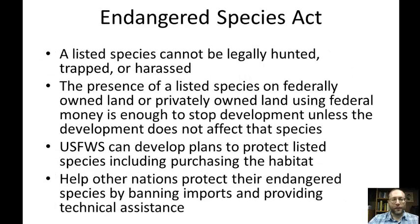As to what the Endangered Species Act does: a listed species, both threatened and endangered, cannot be legally hunted, trapped, or harassed. If the species is found on federally owned land, or on privately owned land where development is using federal funds, then development can be stopped unless it does not affect the species. The U.S. Fish and Wildlife Service can develop plans to protect listed species, including purchasing habitat. It also enables helping other nations by banning imports of endangered species and providing technical assistance.